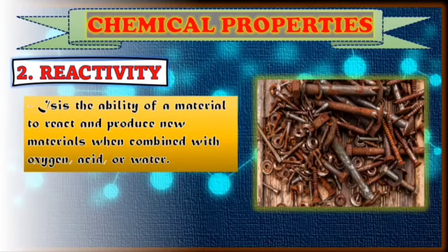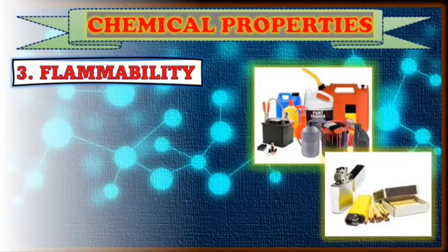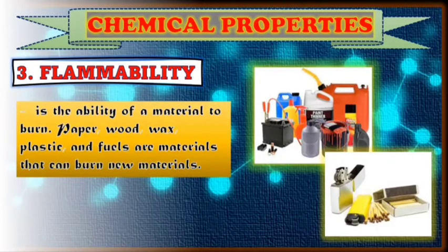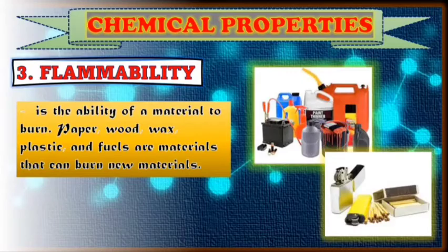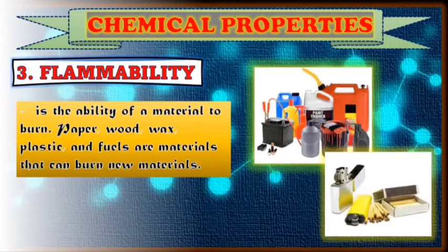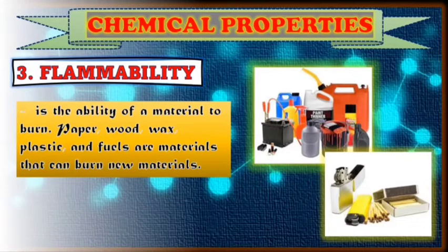Number three chemical property is flammability. It's the ability of a material to burn. Paper, wood, wax, plastic, and fuels are materials that can be burned to produce new materials. These are materials that can easily catch fire, like matchsticks, lighters, electrical sockets, flammable tanks, spray cans, and insecticide sprays — those are what you call flammable materials.